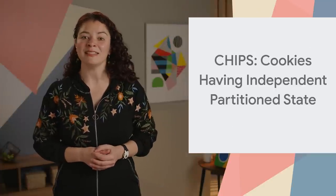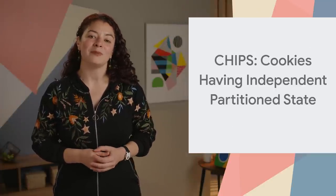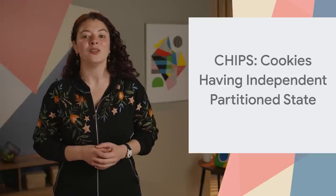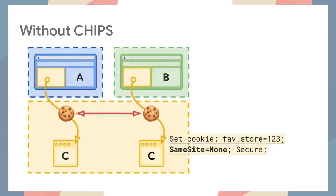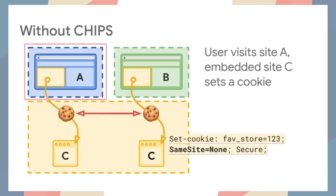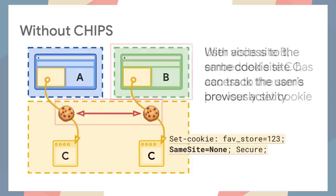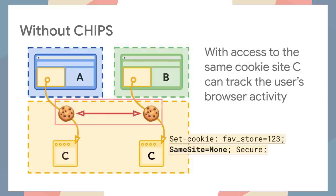CHIPS — Cookies Having Independent Partitioned State — enables opting in to having third-party cookies partitioned by top-level site using the new cookie attribute Partition. Before CHIPS, when a user visits Site A, an embedded Site C could set a cookie on the user's machine. If the user then visits Site B, which also embeds Site C, Site C could access the same cookie that was set on Site A. This allows Site C to compile a user's browsing activity across Site A, B, and every site that it is embedded on.